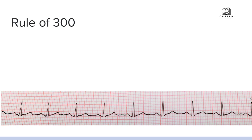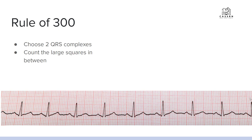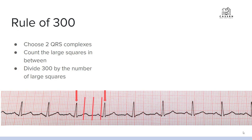Next, we do the rule of 300. This strip is the same, but the result will come out a little different. The rule of 300 works because 300 large boxes equals one minute. You choose two QRS complexes, count the large squares between them, then divide 300 by that number. Here we count three large boxes between our two QRS complexes. So 300 divided by 3 equals 100 beats per minute.